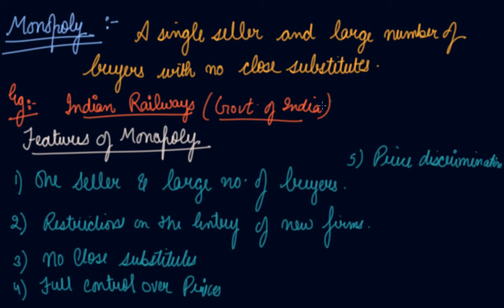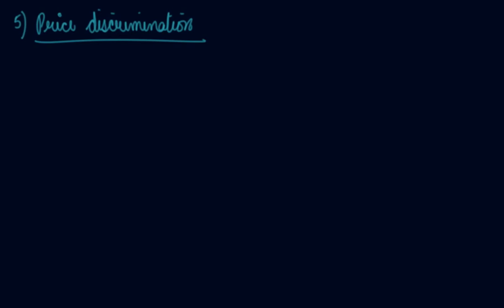The fifth feature is price discrimination. This is the most important feature and can be asked individually in your CBSE board exam. A monopolist may charge different prices from different buyers — this is called price discrimination.